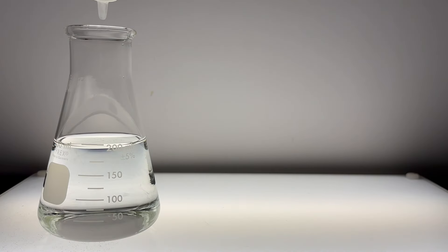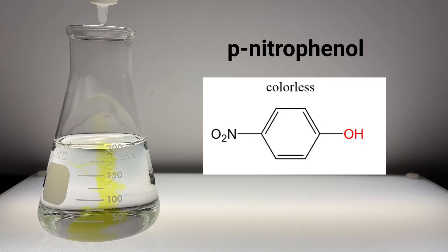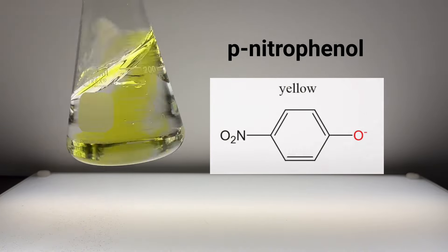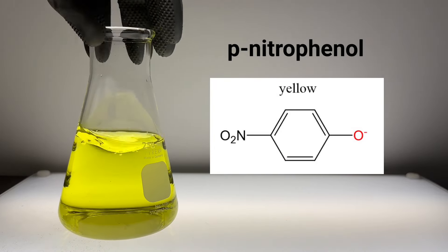The final acid-base indicator used in this experiment is paranitrophenol. This compound also becomes colored in the presence of base. In this case, it turns yellow.